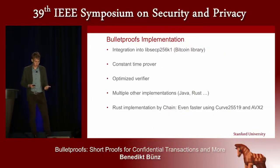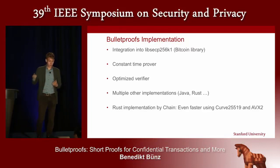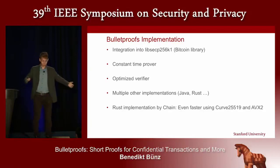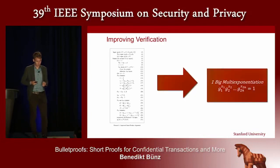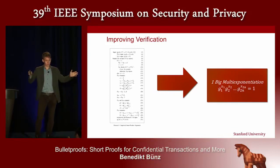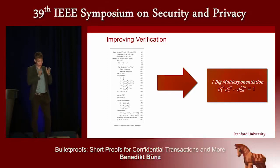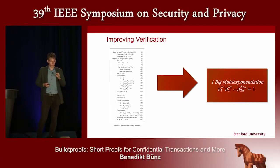We implemented Bulletproofs in the Bitcoin cryptographic library and spent a lot of time optimizing the verifier. Chain Inc. has since done a newer implementation in Rust using AVX2 and curve25519, which is even faster. In our verification, we took the fairly complex verifier protocol and reduced it to basically a single multi-exponentiation. The x values are elements derived from the proof — the proof is logarithmic size, but you expand it into a linear number of elements, and then check a single multi-exponentiation equation.